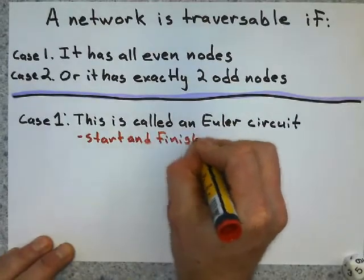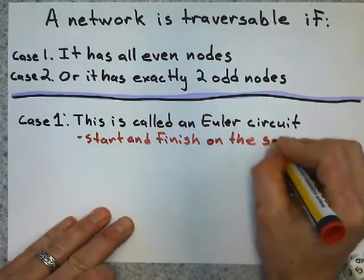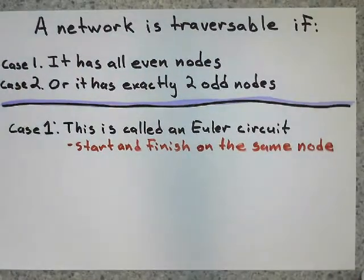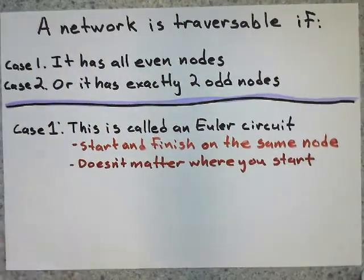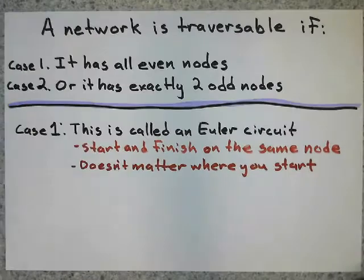So in case one, that's called an Euler circuit. And this is where we start and finish on the same node. And it doesn't matter where you start, but you'll come back to the same node where you started from.